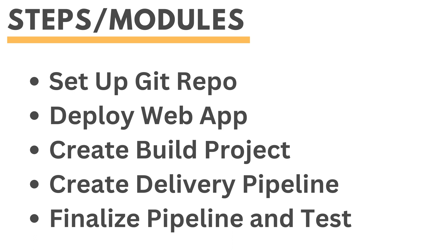The steps involved in this DevOps process will be: first, we will set up our Git repository using GitHub. Then we will deploy a web app using AWS Elastic Beanstalk. Then we'll create a build project for building the application and generating artifacts. Finally, we will create a CodePipeline that will be used for build and deployment of the application. The final stage will be triggering the pipeline and testing if the application is working fine.